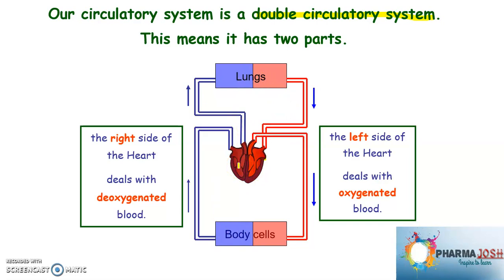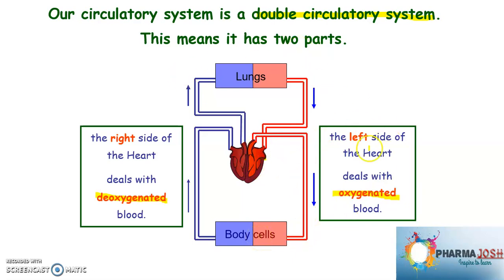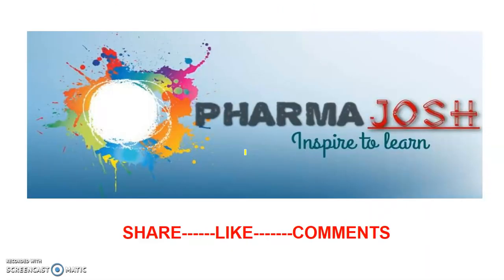In summary, the double circulatory system involves deoxygenated blood from the body entering the lungs, where it becomes oxygenated blood, and then re-entering the heart to be pumped to different parts of the body. Thank you for watching the Pharma Josh YouTube channel. If you like this video, please share, like, and comment.